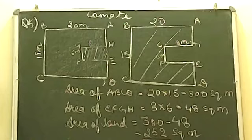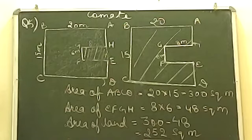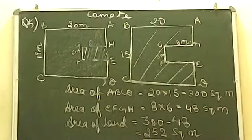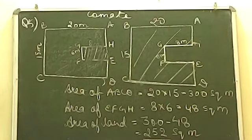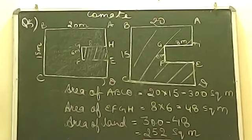The person is dividing this land into two equal parts. If we divide 252 into two equal parts — one for hospital and one for school — what portion will everybody get?